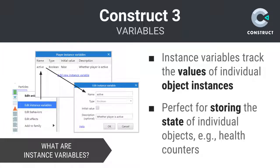Instance variables are powerful because they allow you to keep track of information relevant to individual objects in your games. You define instance variables for the object type and then set the value for each instance of that object type. In this example, I've created a boolean instance variable named active on the player object type. I can, in turn, refer to this value when programming my game.